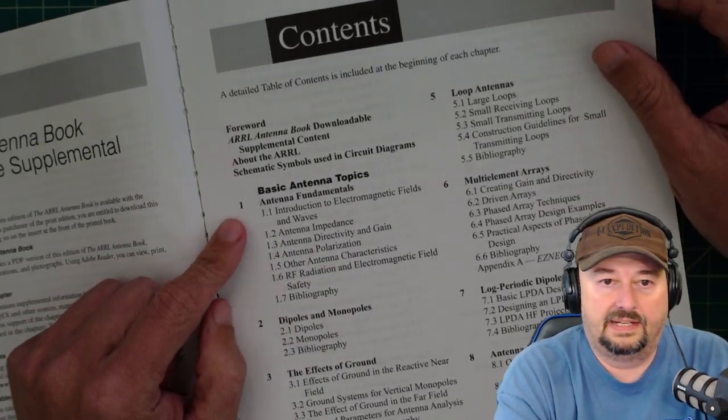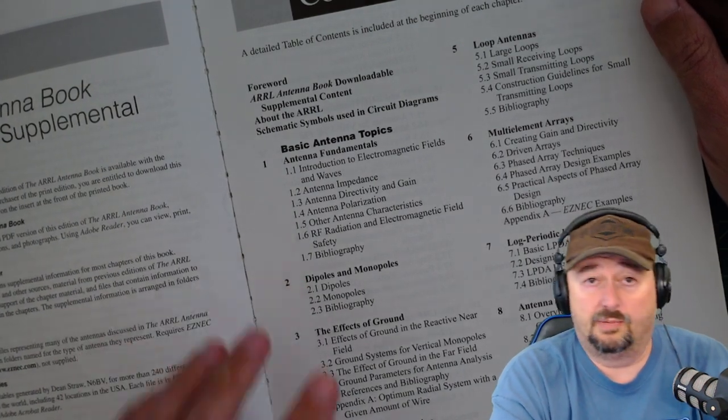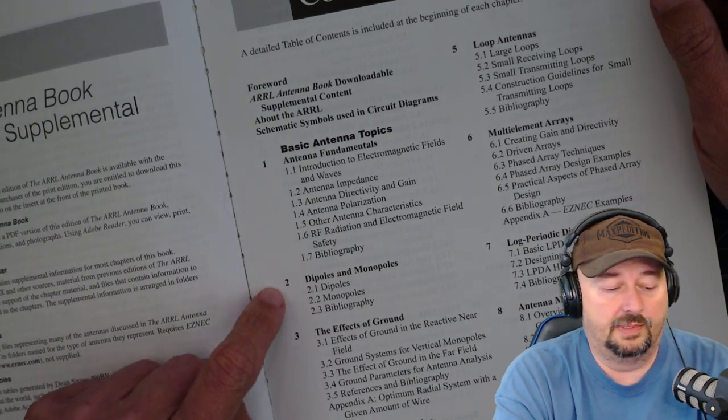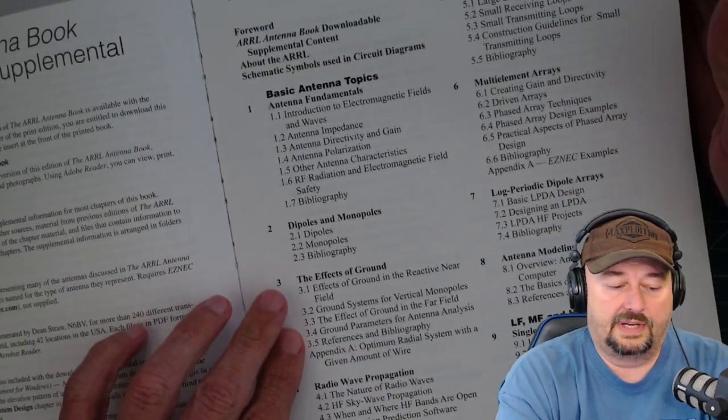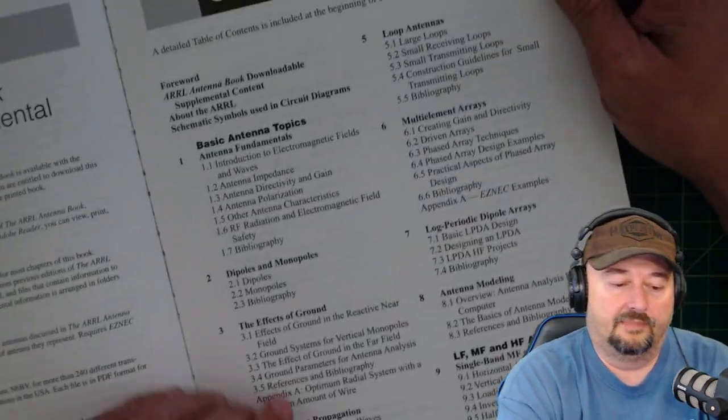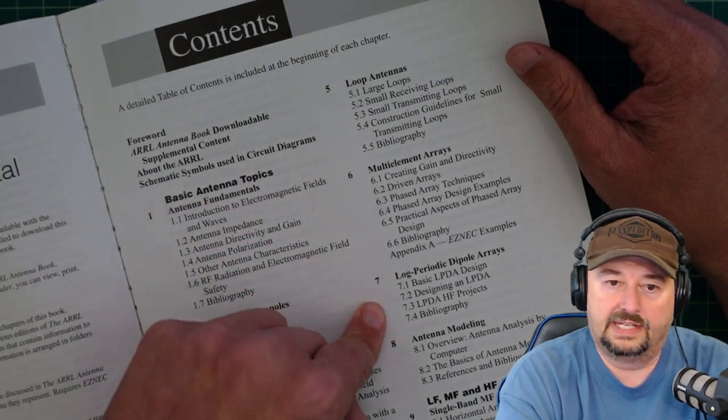We have basic antenna topics, some fundamentals here, and we'll take a look at those. Then it goes through dipoles and monopoles, which are the beginner-type antennas and stuff that everybody should be really familiar with. Ground propagation, important stuff. Then we start to get into more specialized antennas like loops, multi-element arrays, log periodics. It has a chapter on antenna modeling, which is awesome.